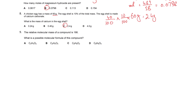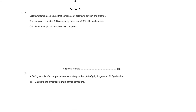The relative molecular mass of a compound is 166. We calculate the Mr of one option: 4×12 + 3×1 + 2×16 = 83. Since 83 is half of 166, the molecular formula is double that empirical formula, giving C8H6O4.